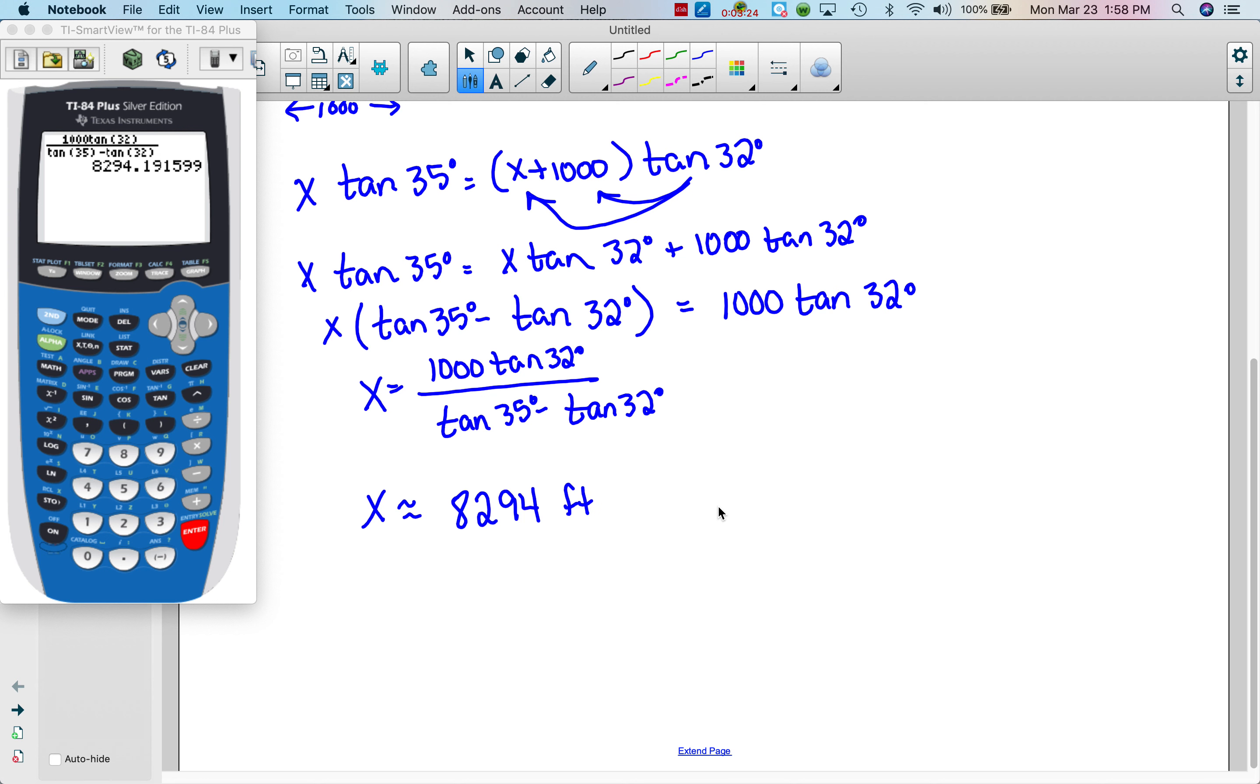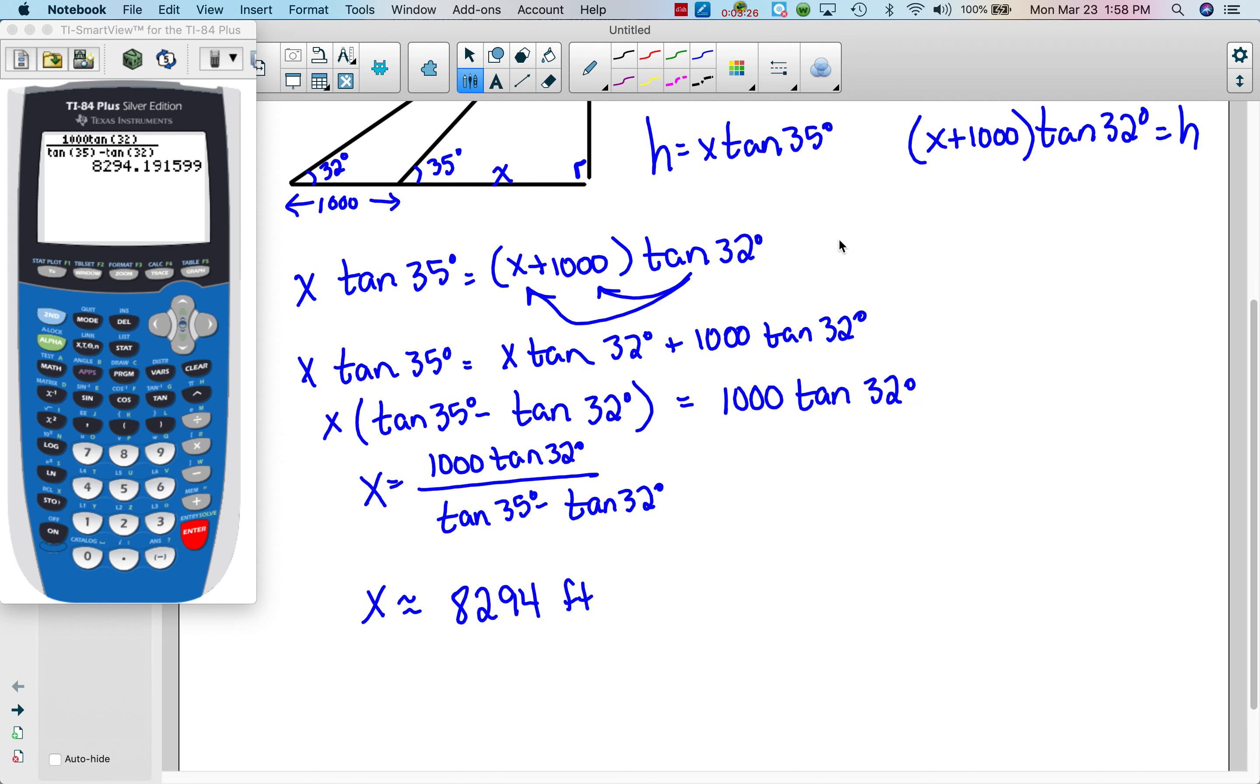And that is feet, so I don't want X, I want H. So I'm going to come back up here to H equals X tangent 35. So I'm going to take what I have in my calculator and I'm going to multiply that by tangent 35, and I get H is approximately 5807.7 feet.